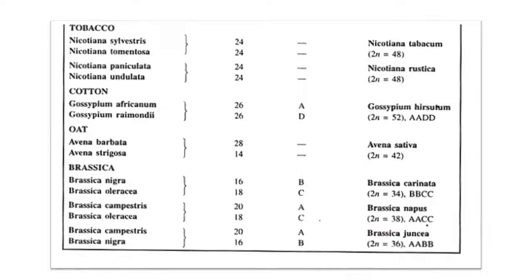In Brassica, Brassica nigra, Brassica oleracea, and Brassica campestris are three important diploids with different chromosome numbers and genomes B, C, and A respectively. Brassica carinata is a tetraploid with BBCC composition and 34 chromosome numbers. Brassica napus is AACC with 38 chromosome numbers. Brassica juncea is AABB — that is Indian mustard — with 36 chromosome numbers.